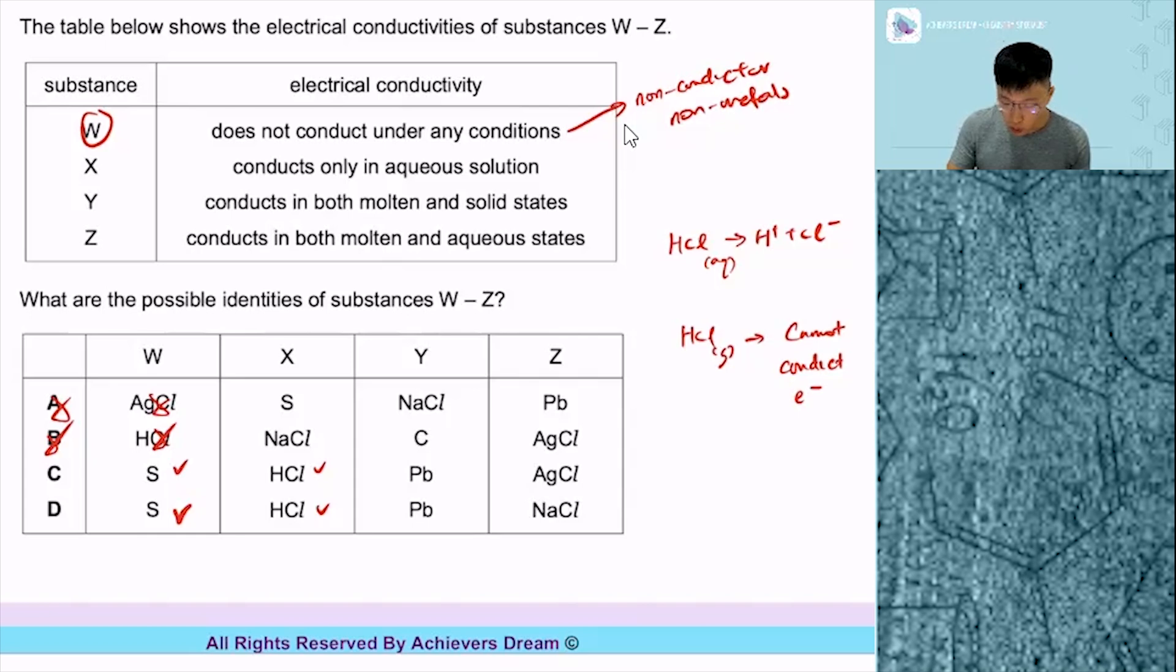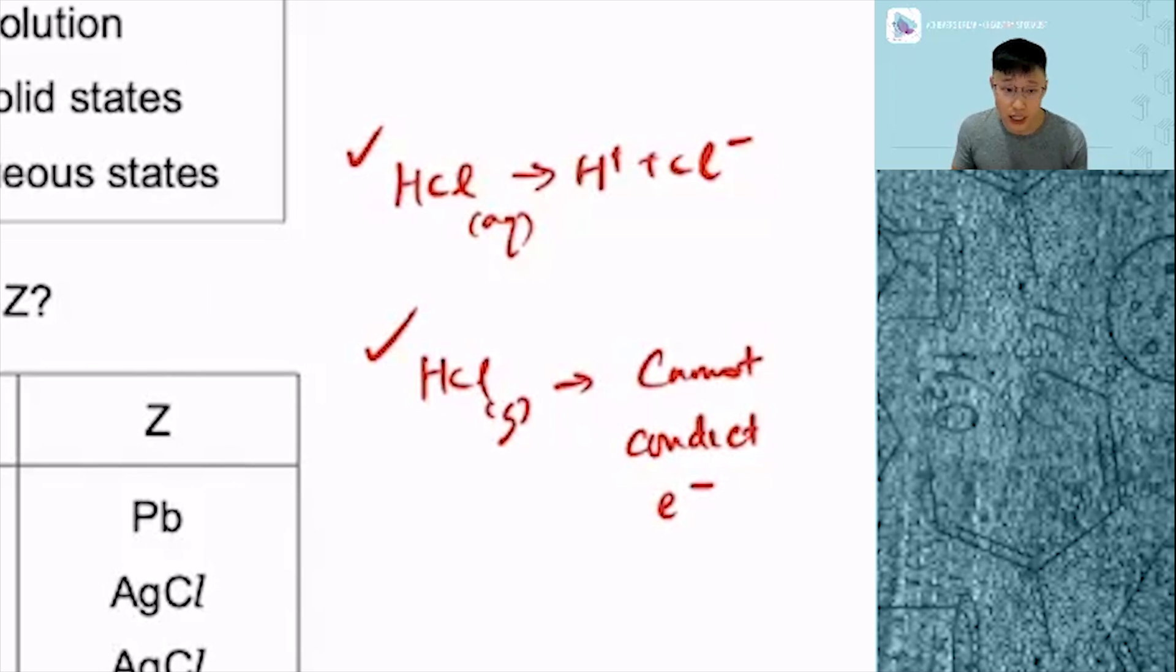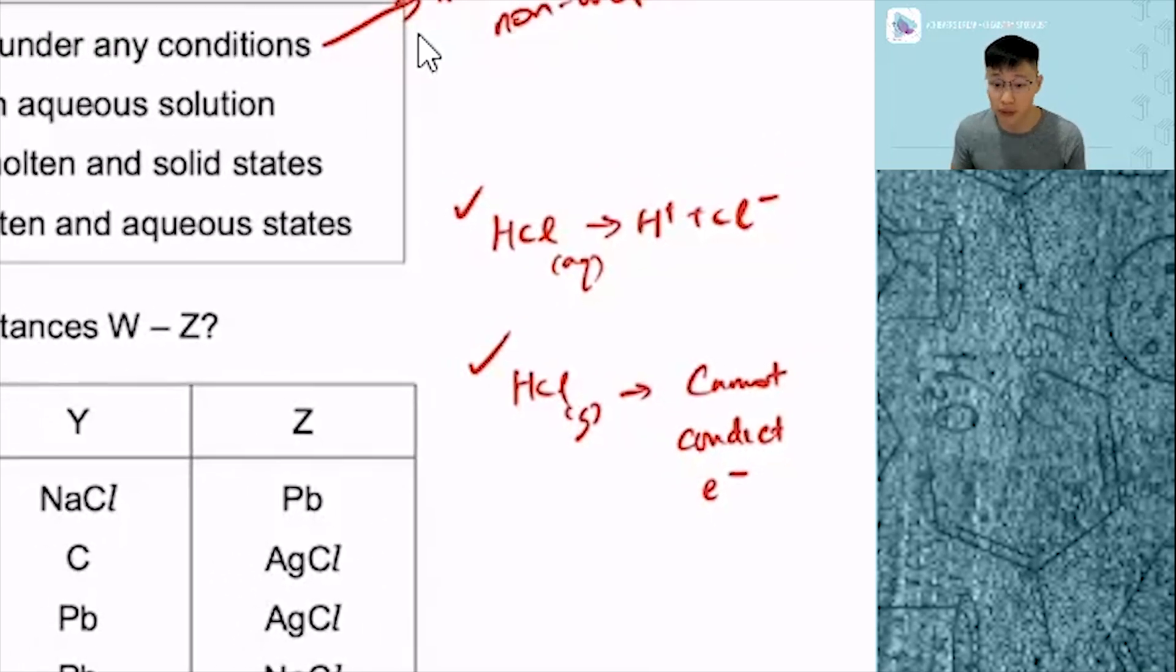Questions like to test on this, asking you to draw the dot and cross diagram. So if you can, try on your own. We always ask our AD students to test out HCl aqueous and HCl gas. Try to draw it if you are able to. It's a popular exam question.